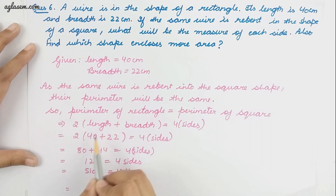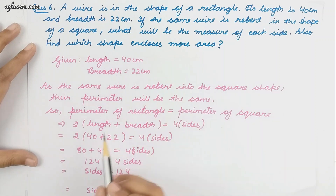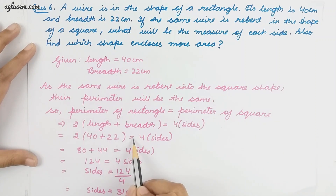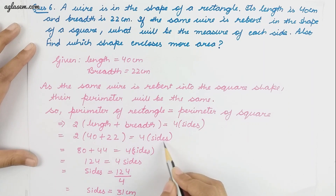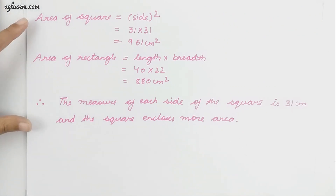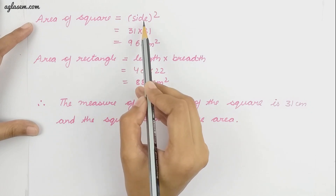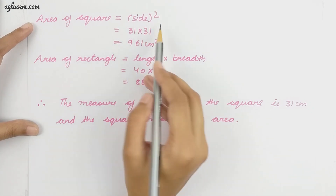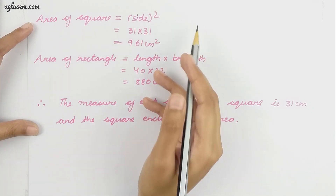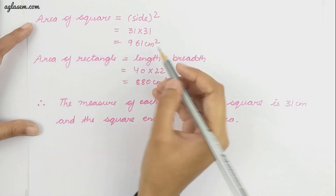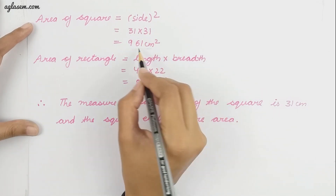The length is 40 centimeter and breadth is 22 centimeter. From this we get the value of each side as 31 centimeter. The area of square is side into side, so 31 into 31 gives 961 centimeter square.